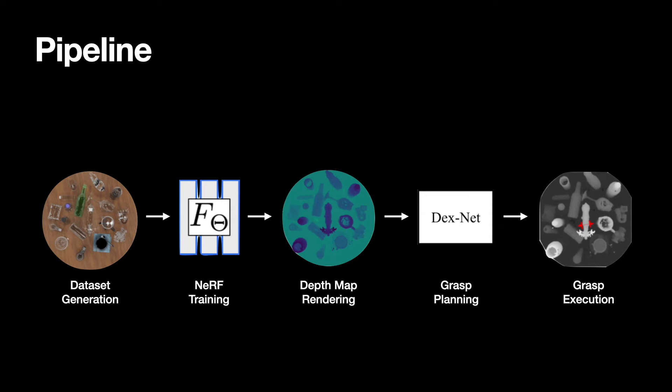To grasp transparent objects, DEXNERF trains a NeRF model for the specific scene, renders a transparency-aware depth image from a top-down view and passes it on to a DEXNET grasp planner that computes a top-down parallel jaw grasp.